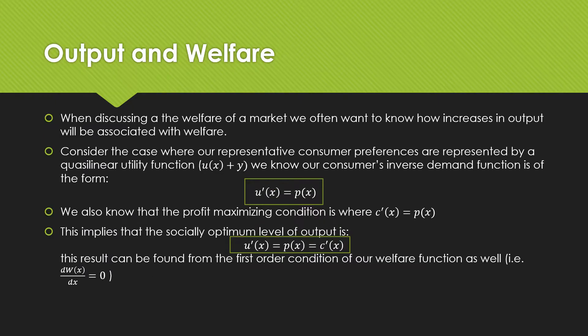So when discussing the welfare of a market, we often want to know how an increase in output will be associated with welfare. Consider the case where our representative consumer's preferences are represented by a quasi-linear utility function. This is actually more common than you think when we're talking about aggregating consumer preferences.